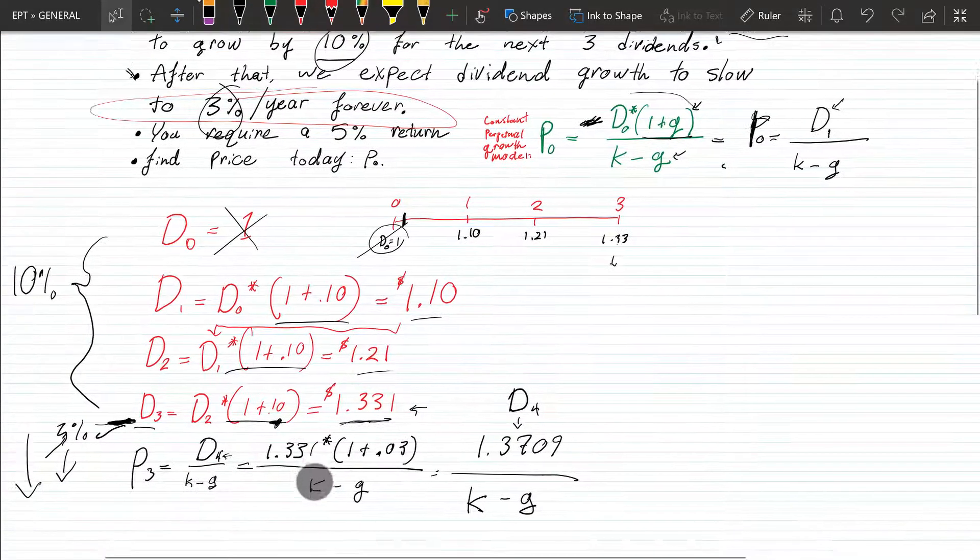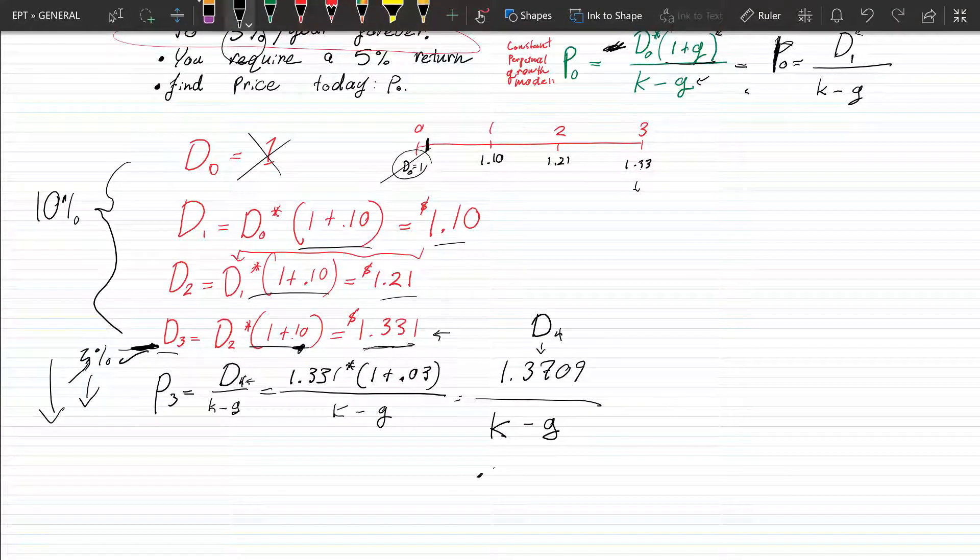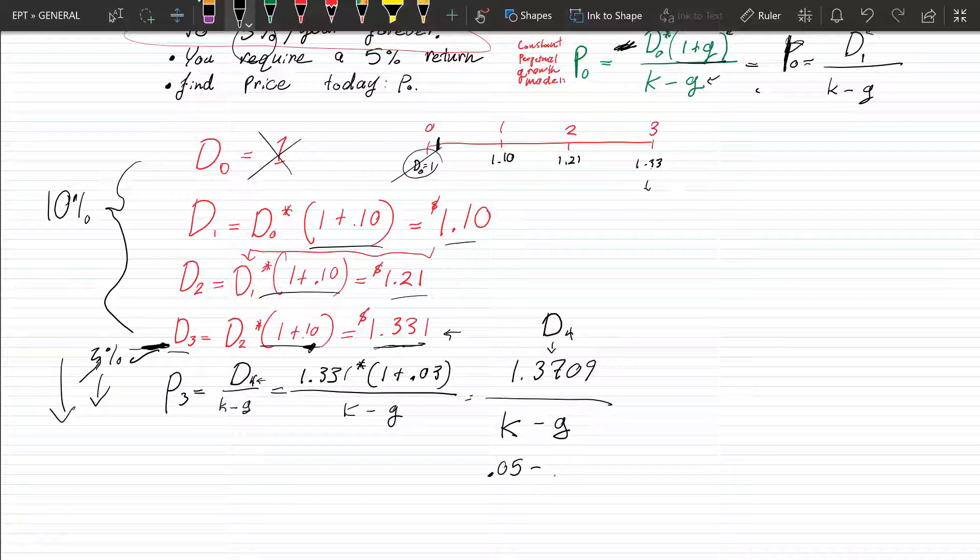Okay. Well, what's K? We require 5%. And this growth rate here for these dividends is 3%, right? So we get a whopping 0.02%. And then we'll take this, this fourth dividend here, 1.3709 and simply divide it by 0.02. And when we do that,